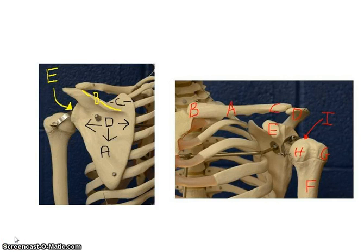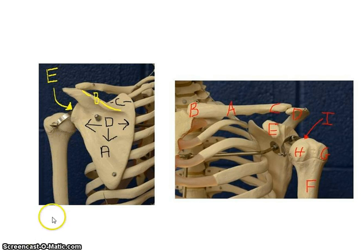In this video we're going to go through the bones and surface markings of the upper limb, starting from the shoulder down through the arm all the way to the hand. This won't go in the direct order that your lab packet does, but it will cover all the parts that you need to know.